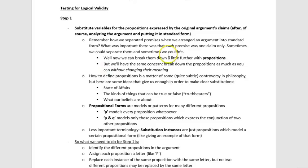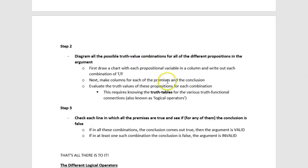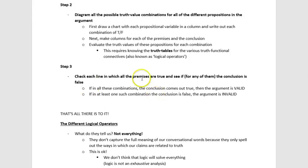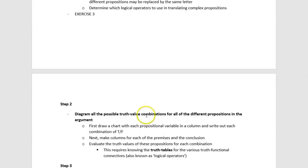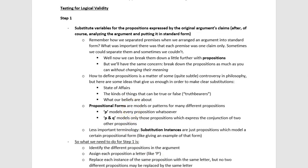We have one more thing to talk about: translations, which the book covers as kind of the first step of logical analysis. In my lecture notes, the procedure for testing arguments for logical validity has step one as doing the translation, step two as doing the truth tables like we've already covered, and step three as checking the truth table to see if the argument is valid. We've covered steps two and three pretty exhaustively — now we just need to talk about step one.